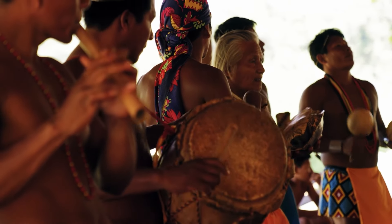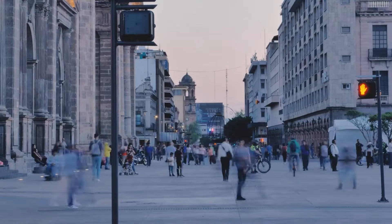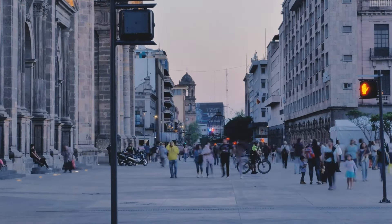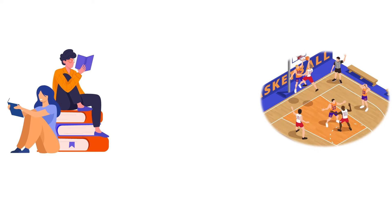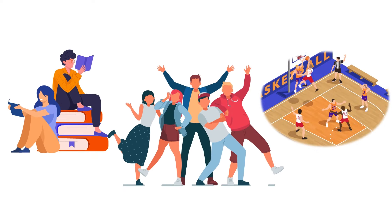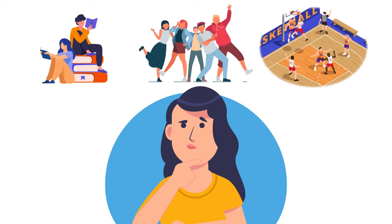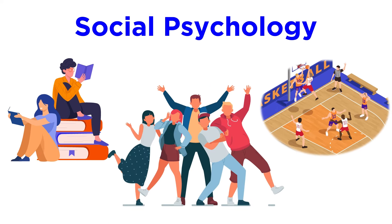Humans are social animals. We instinctively form societies, and in more recent history, sprawling civilizations. We tend to involve ourselves in smaller groups as well, be they sports teams, book clubs, or just a good group of friends. So how do we interact with each other? How does being in different groups change our behaviors? How do we think about others and ourselves? The field of social psychology encompasses all of these questions and more.